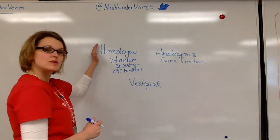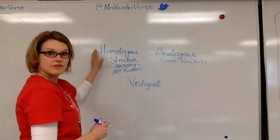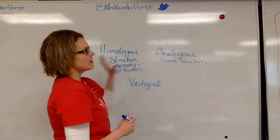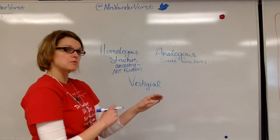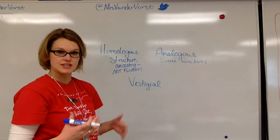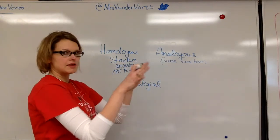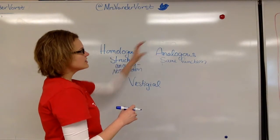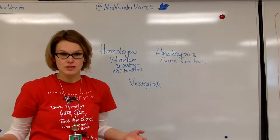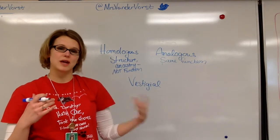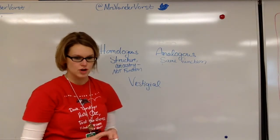An example of homologous structures: the arm of a human and the wing of a bat. They do not have the same function, but they do have similar bone structure, which leads scientists to believe they are related way, way back. An example of analogous structures: the wing of an owl and the wing of a butterfly — same function, but not the same structure.